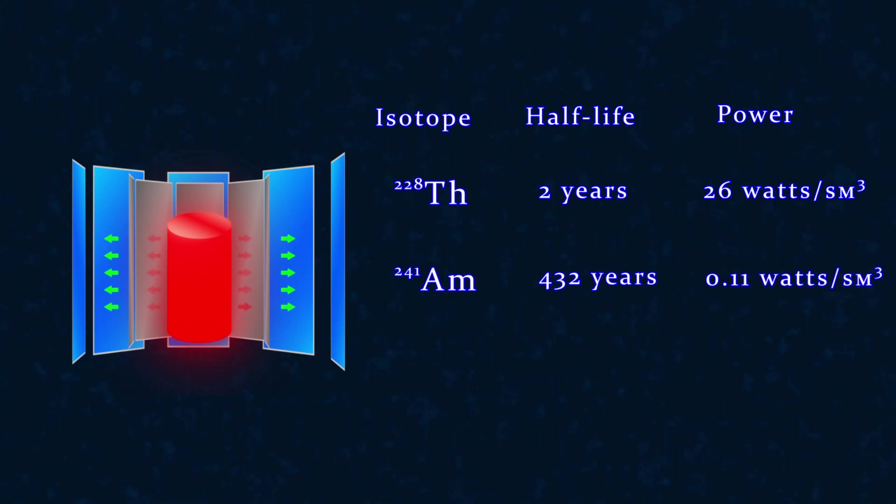For example, the power source can be fueled with thorium-228, which has a half-life of just under two years, but emits a whopping 26 watts of thermal energy per gram. Or americium-241, which gives only 0.11 watts per gram, but has a half-life of over 400 years.